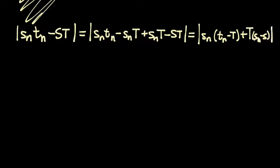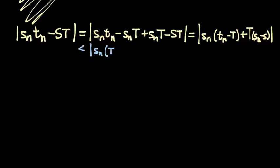We realize we can split apart this absolute value in a couple of different ways. First, we can use the triangle inequality applied to this addition to break it apart over the plus. We end up with less than the absolute value of Sn times the quantity TN minus T, plus the absolute value of T times the quantity Sn minus S.